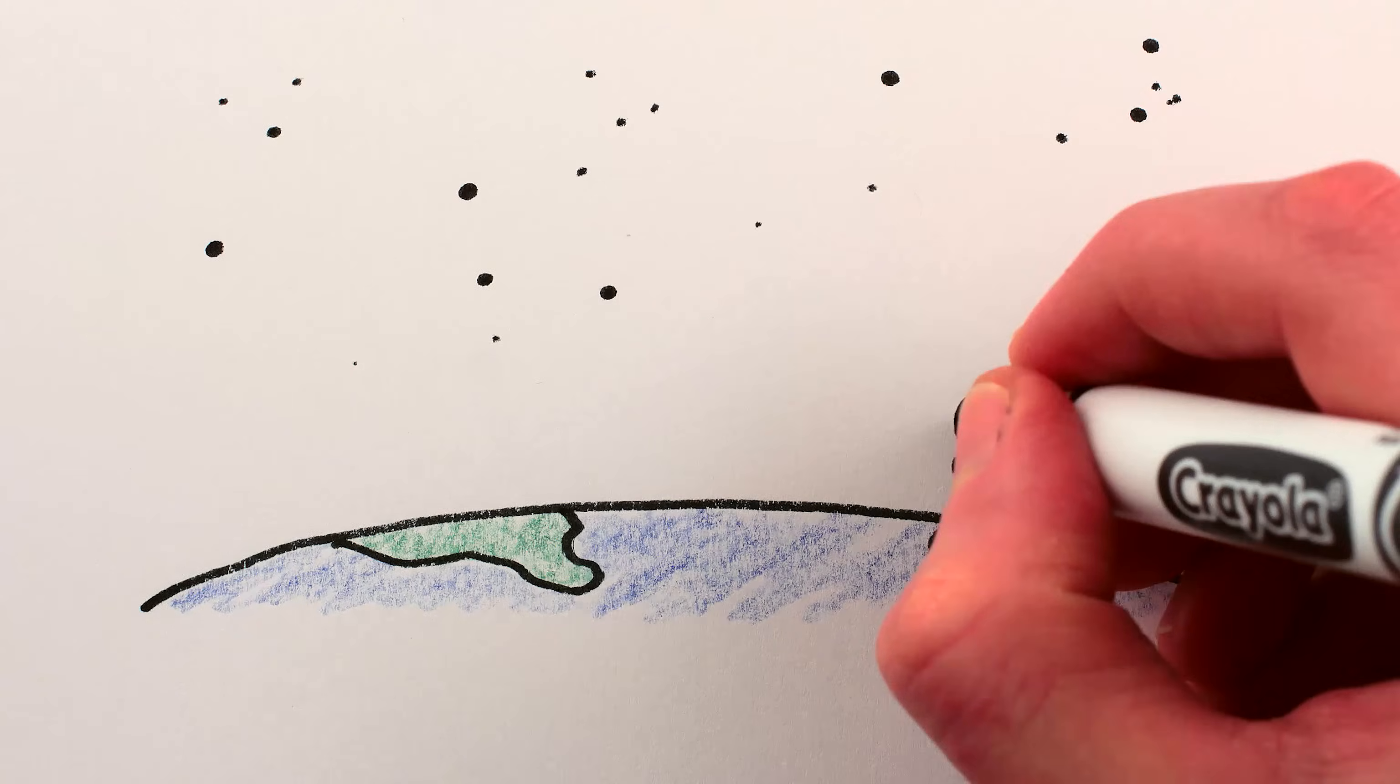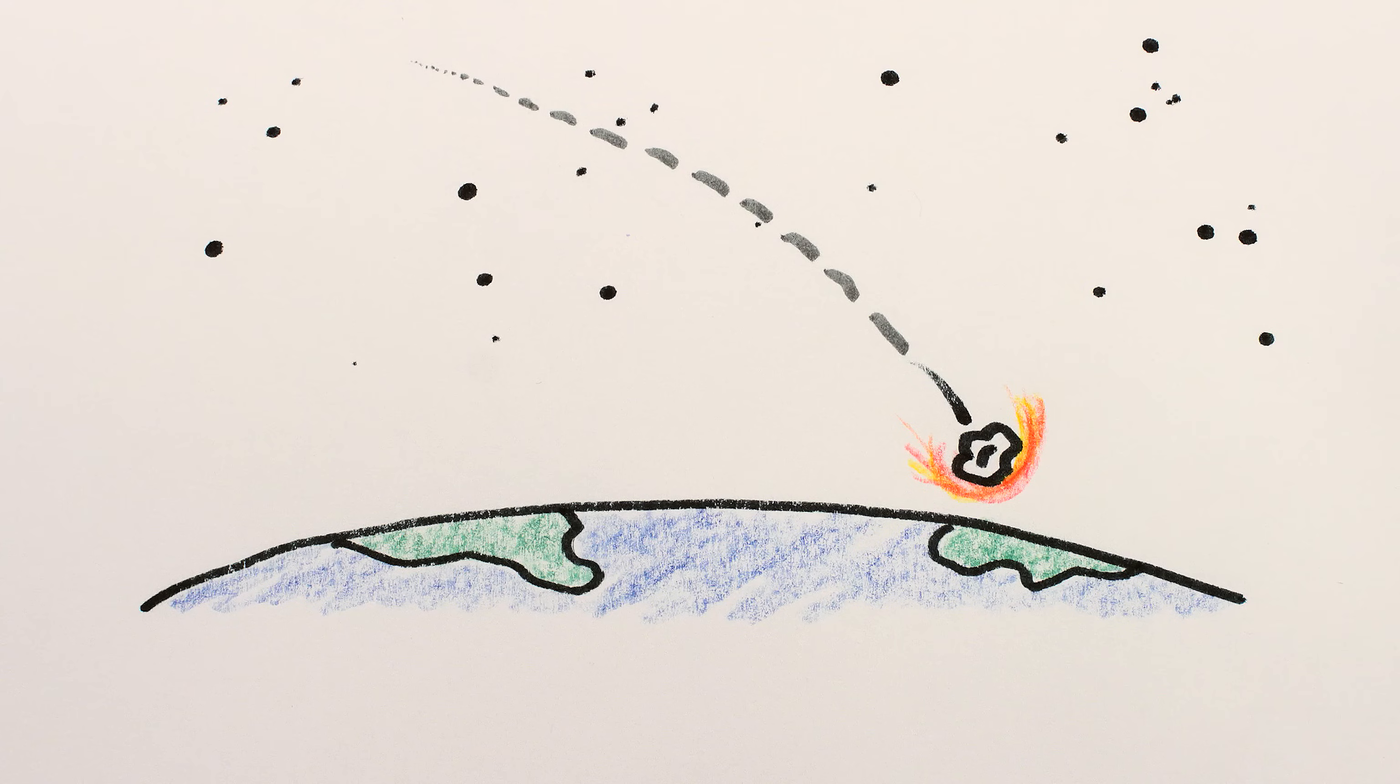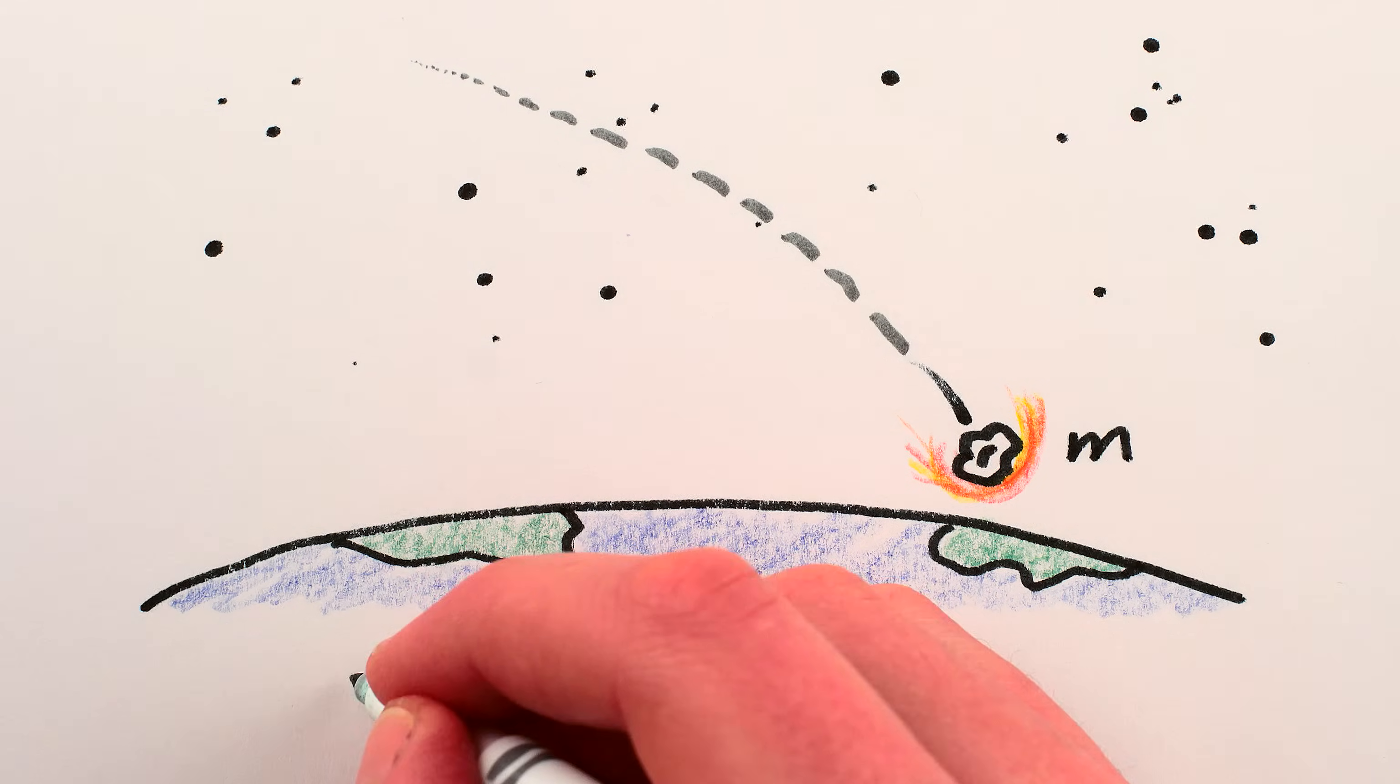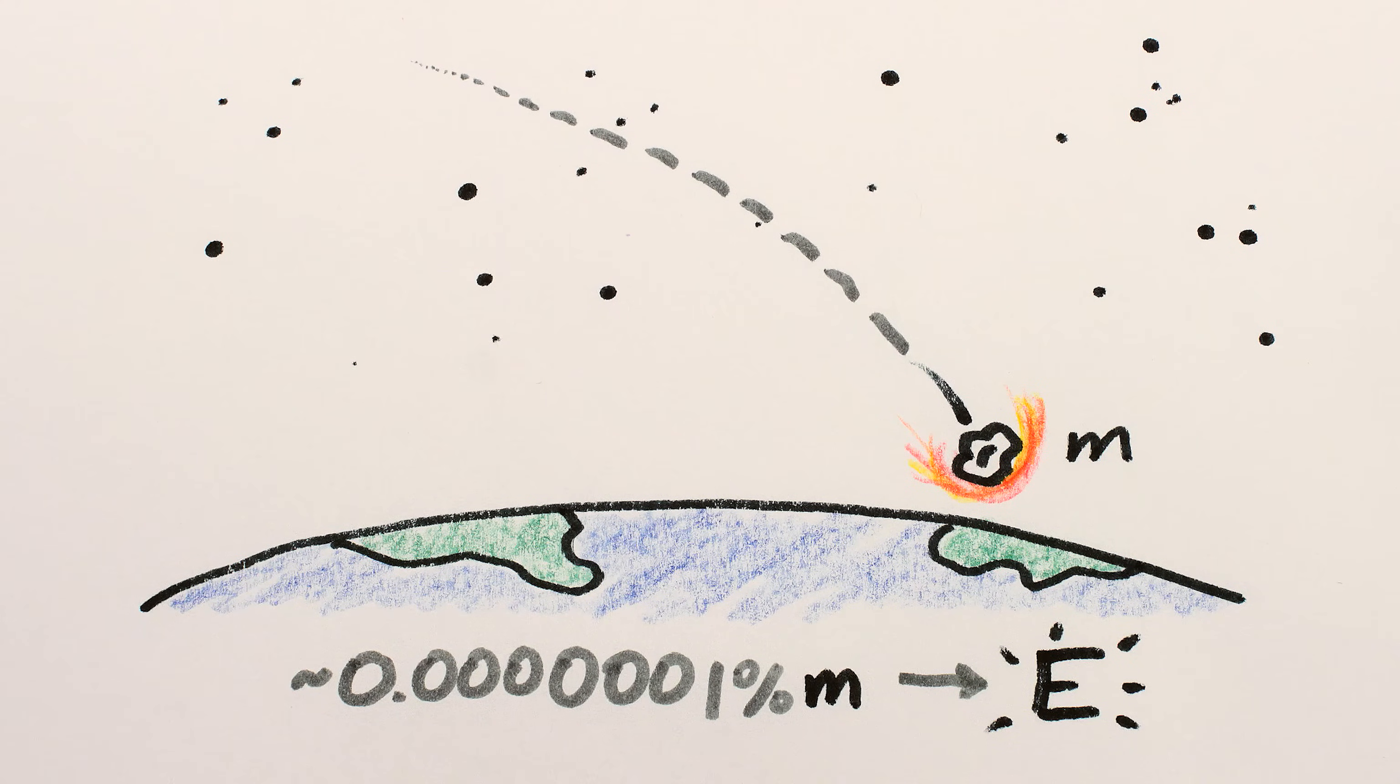For planets and stars, this conversion of mass into energy is pretty pathetic. An object falling to the surface of the Earth releases only about one billionth of its mass as energy. That's basically as bad as a chemical reaction, and explains why we don't think of falling to the ground as a way of converting mass into energy. It's a really bad way.